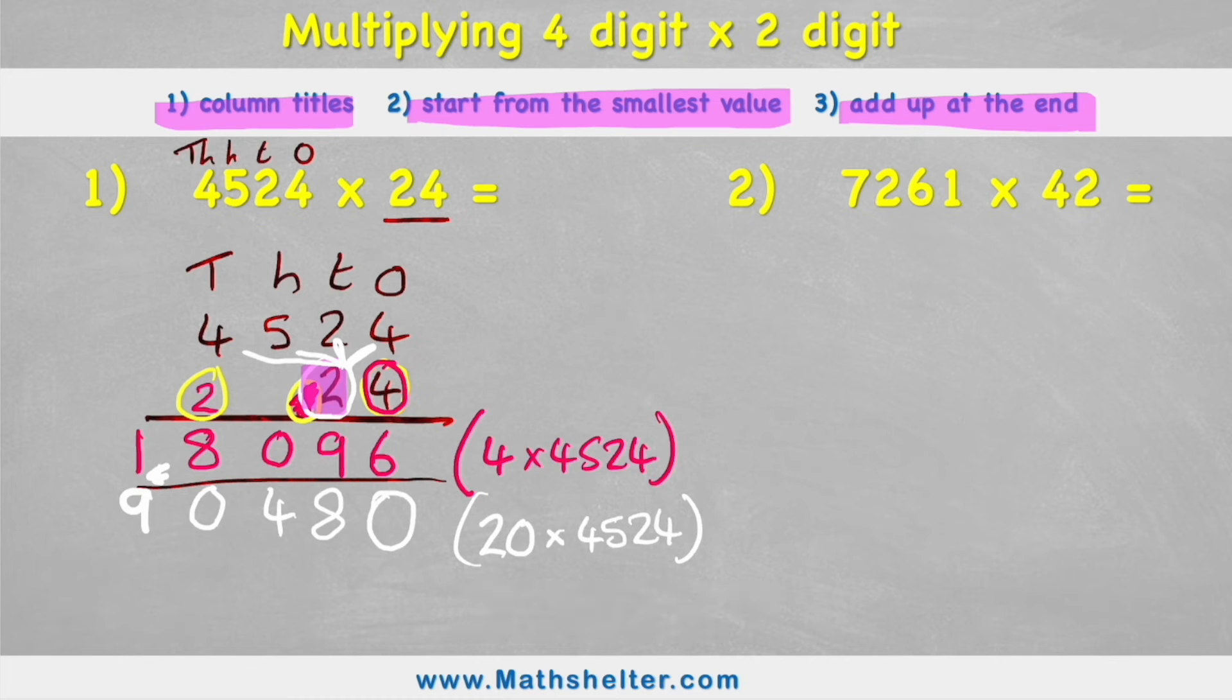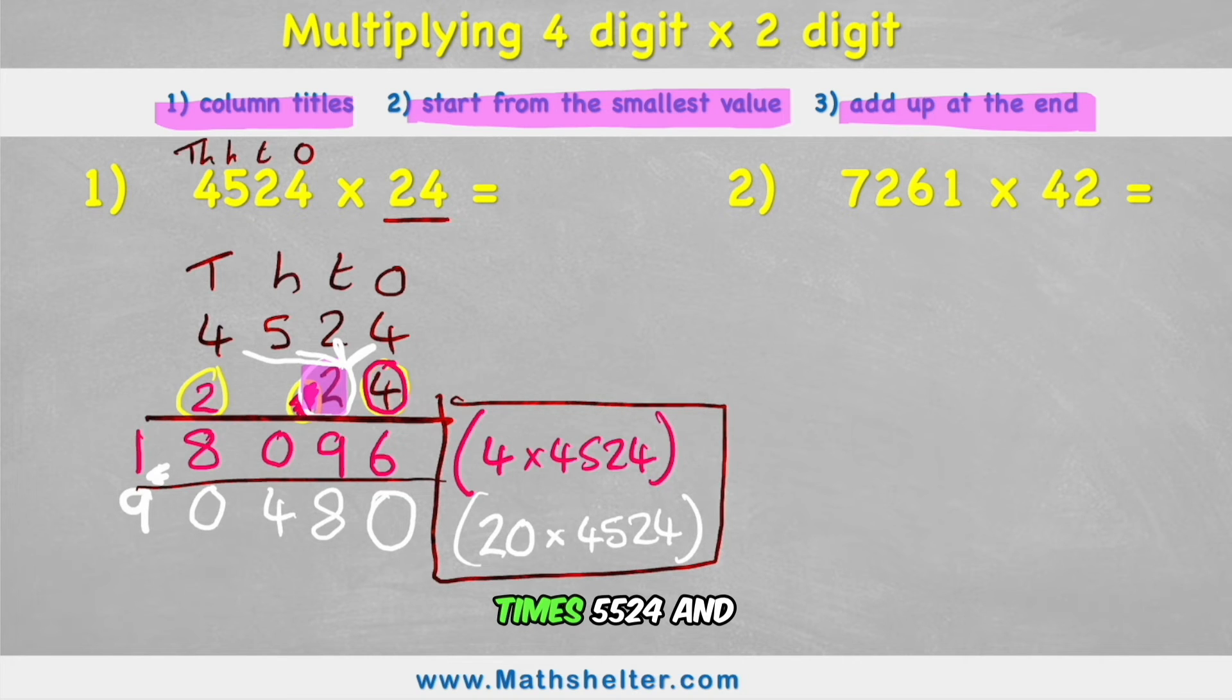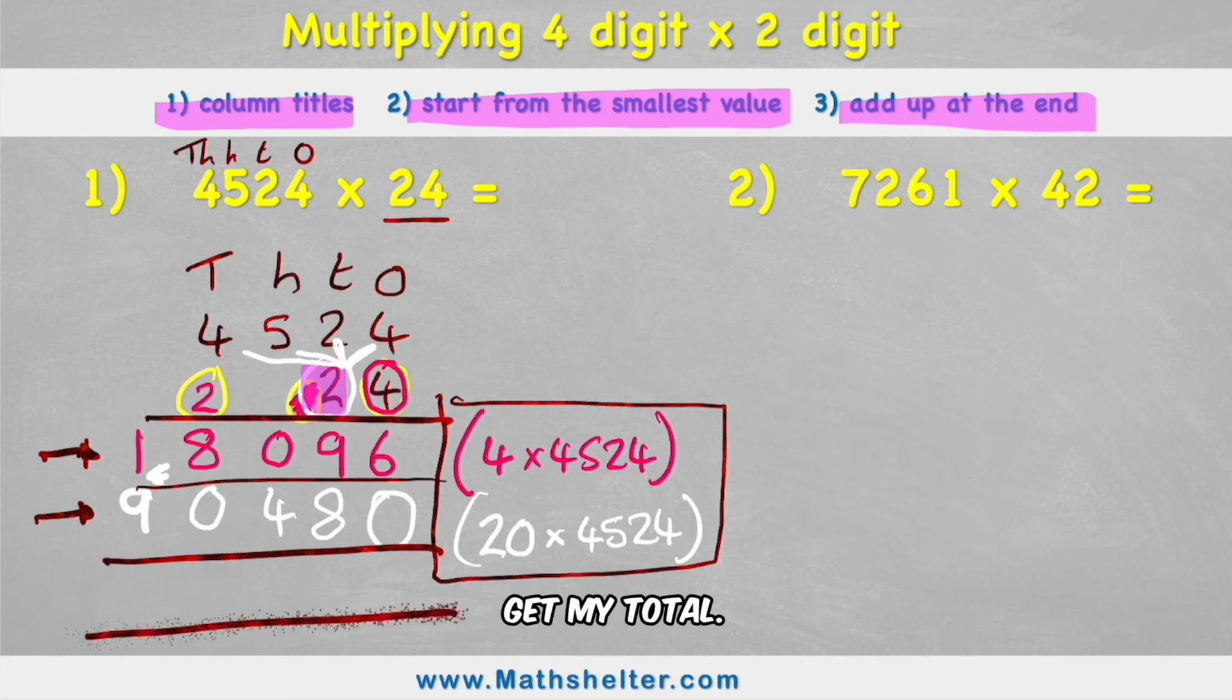But am I finished? No because what I've just done is I've added up the individual parts. I've done 4 times 4524 and I've done 20 times 4524. And I got these two answers. So now what I have to do is I have to add these two together to get my total. So I'm just going to treat it like column addition. And I'm going to look into the 1s column first and I can see I have a 6 add a 0. 6 add 0 is 6.